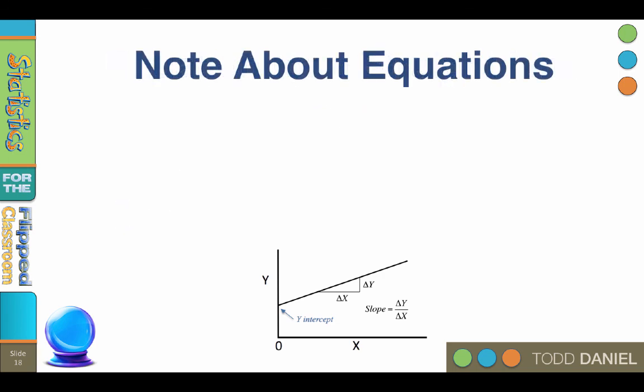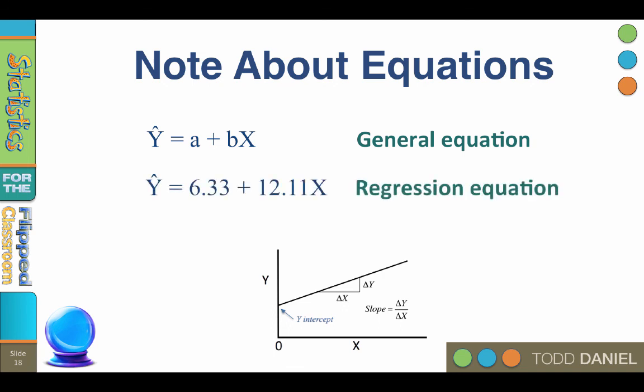One final note about equations. The formula y-hat equals a plus bx is the general equation for a straight line, but this is not a regression equation yet. It becomes a regression equation when you plug in actual numbers for a and b. Y-hat equals 6.33 plus 12.11x is an example of an actual specific regression equation, because it has the values in it.